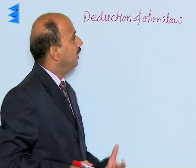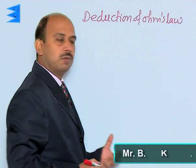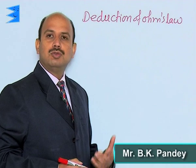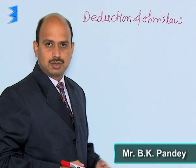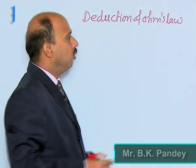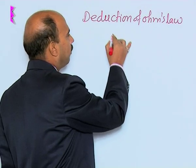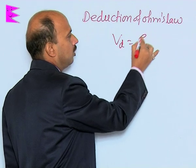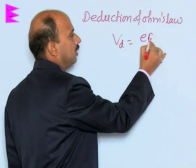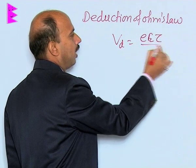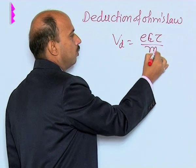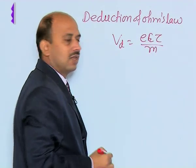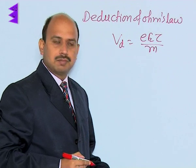Now we will be doing here the deduction of Ohm's law using drift velocity. We know the formula for drift velocity: V_d is equal to eEτ upon m, where τ is relaxation time.